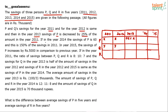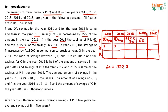In 2014, P's savings are directly given as 60 (thousand). Also, this 60 is stated to be 150% of savings in 2011. So 60 = 150% of x, meaning x = 40. Therefore P's savings in 2011 and 2012 are both 40, and P's 2013 savings are 75% of 40 = 30.